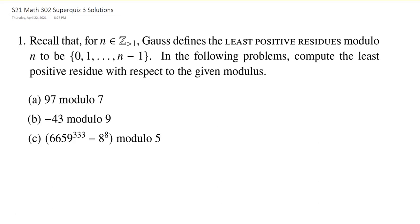So in the three subproblems here, A, B, and C, we're just basically asked to find a least positive residue for some number modulo a given modulus. So in the first one, for example, we want to find the least positive residue for 97 modulo 7. So this is a pretty simple problem if you know what it means to reduce something modulo 7. So let's very briefly talk about that.